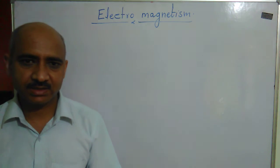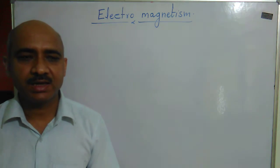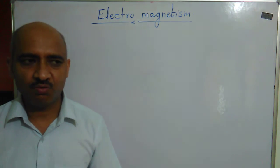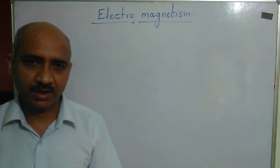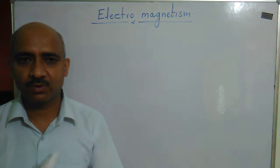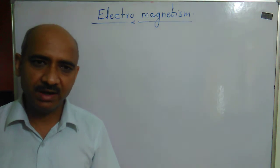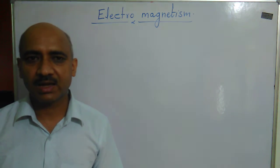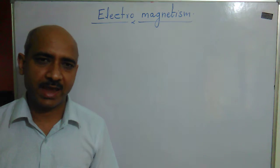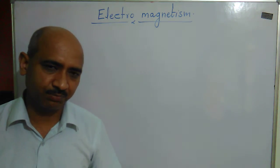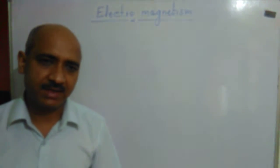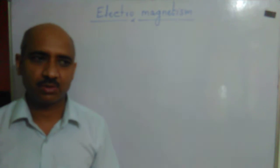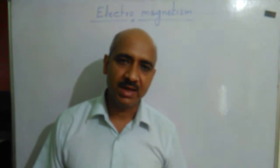Let us discuss a few experiments which prove the existence of a magnetic field when current flows through a conductor. This is proved by Oersted's experiment. Oersted proved that when current flows, a magnetic field is developed around that conductor.